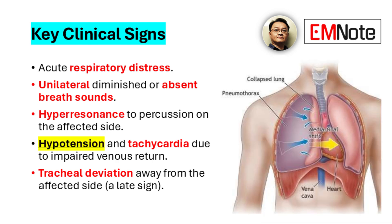These signs include acute respiratory distress, unilateral diminished or absent breath sounds, hyperresonance on percussion, hypotension, tachycardia, and as a late finding, tracheal deviation away from the affected side.